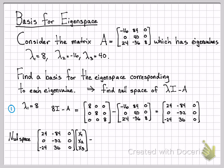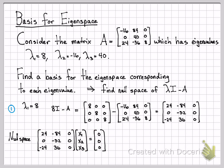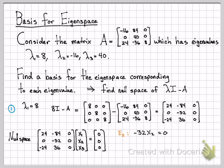Finding the null space means finding linear combinations of these rows that give the all-zero vector. Setting up this equation equal to all zeros, I'm going to find x1, x2, and x3 to solve this system of equations. In general there are three options — one solution, no solution, or infinite solutions — but when finding the null space of λI minus A for eigenvectors, these systems always have an infinite number of solutions.